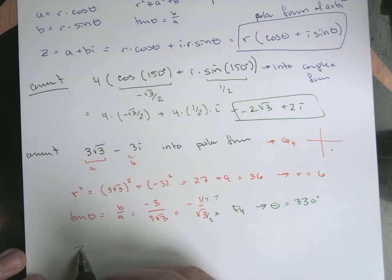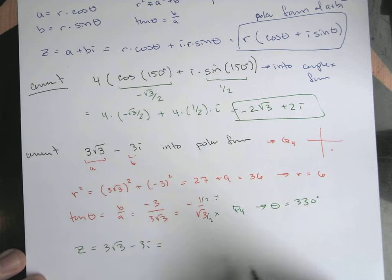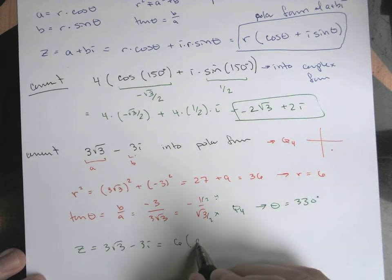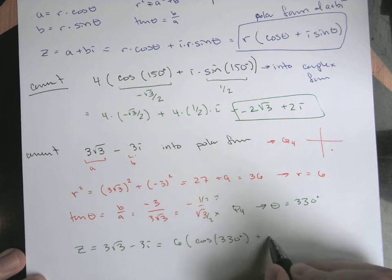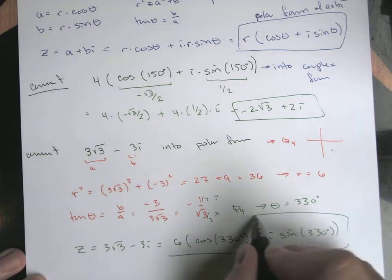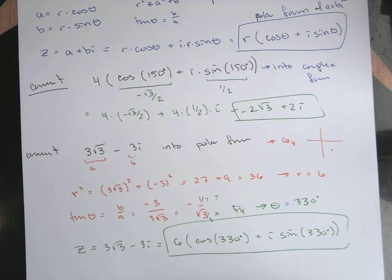So the version of this, right? So 3 root 3 minus 3i. So this becomes our, right, radius out in front, 6. And then cosine 330 degrees, plus i times the sine of the same angle. Those two angles on the inside should be in sync. They should be the same value. That's part of what makes this work.